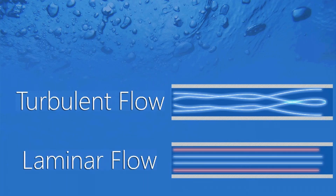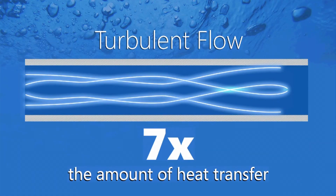So when things become turbulent, those layers kind of break up and it improves the heat transfer from the steel into the water. And the difference between laminar and turbulent can mean the difference between seven times the amount of heat transfer.